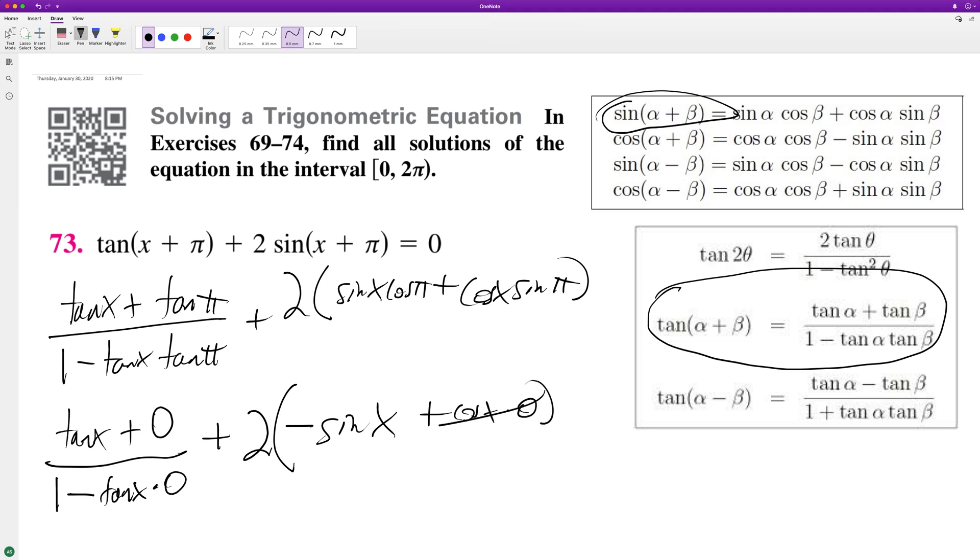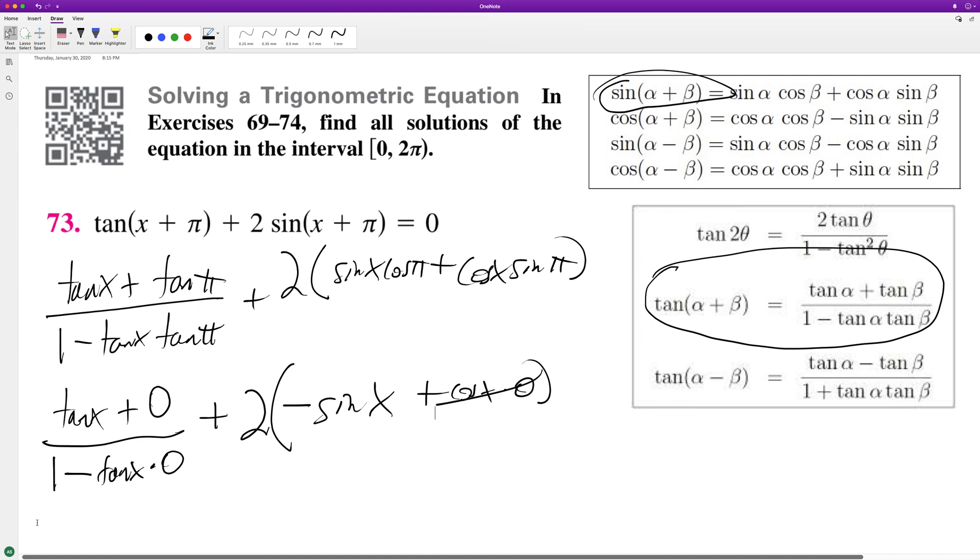So these cancel out, so we're left with this basically becomes tangent of x minus 2 sine of x equals 0.